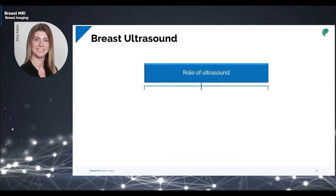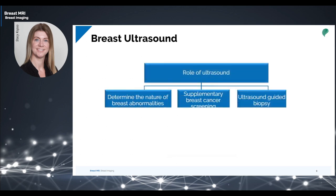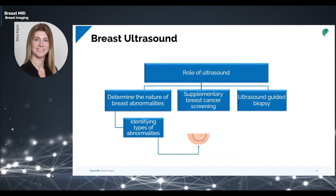The nature of a breast abnormality is determined by identifying the different types of abnormalities detected during the physical exam — whether it is a palpable lesion such as lumps, cysts, solid nodules, and others, or an abnormal sign or symptom such as bloody nipple discharge or a change in the appearance of the breast.